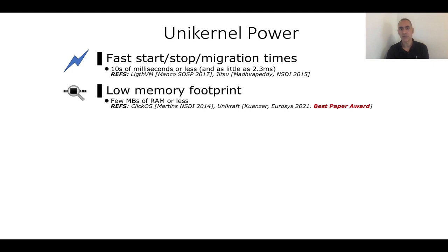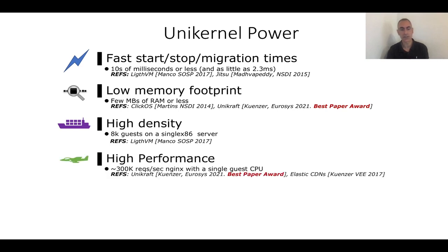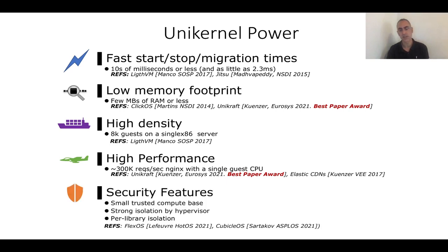Unikernels can provide very low memory footprints, so you can run standard applications such as Nginx in a few megabytes of RAM or even less — and there's a paper showing this, including one of ours that last week got the best paper award at EuroSys. They can also provide high density, running thousands of instances on servers, high performance such as 300,000 requests per second on an Nginx web server on a single CPU, and nice security features from throwing away unneeded code.